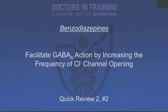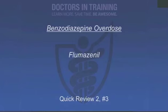What is the mechanism of action of benzodiazepines? They work on the GABA receptor — their primary action is to increase the frequency of chloride channel opening, allowing more chloride into the cell and decreasing the action potential. What is the antidote for benzodiazepine overdose? If someone gets too much benzodiazepine, you can use flumazenil.